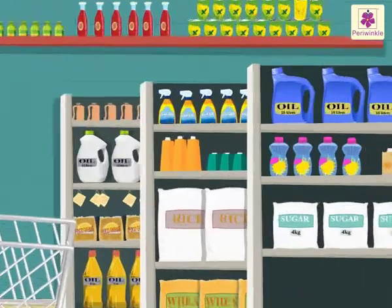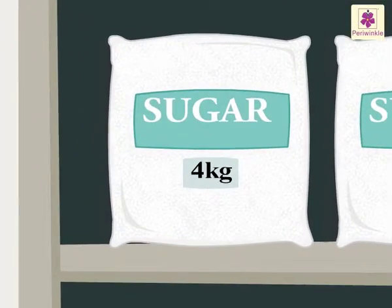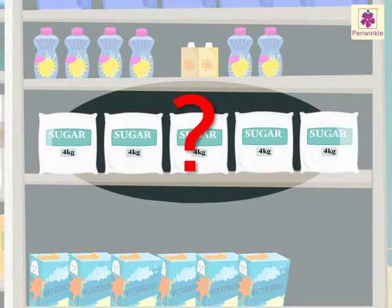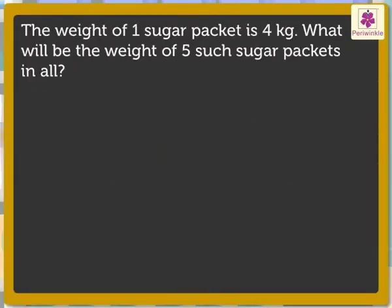The weight of one sugar packet is 4 kilograms. What will be the weight of five such sugar packets in all? First, we read this story. What information does it give? The weight of one sugar packet is 4 kilograms.